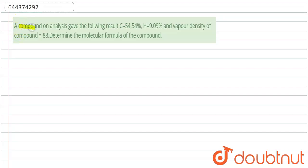Hello guys, today we are given a question that a compound on analysis gave the following result: carbon is equal to 54.54%, hydrogen is 9.09%, and vapor density is 88. So we have to determine the molecular formula of the compound.